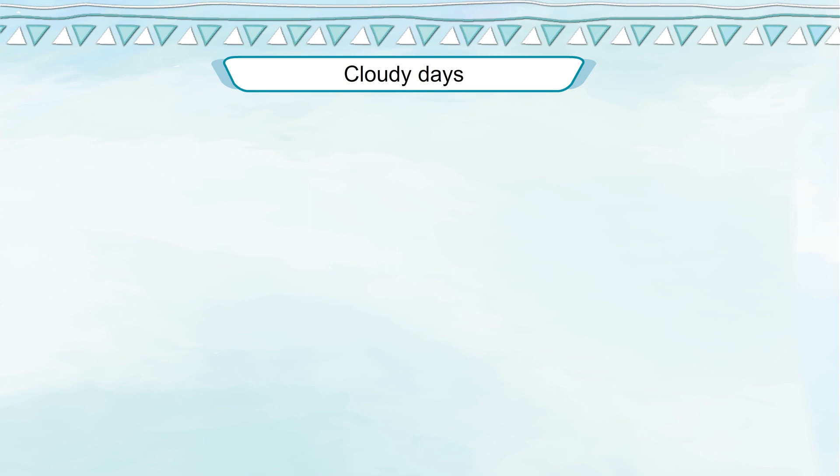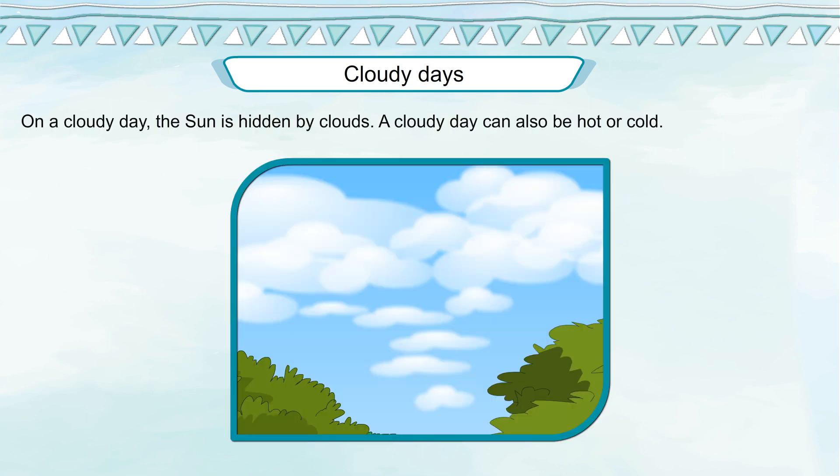Cloudy Days. On a cloudy day, the sun is hidden by clouds. A cloudy day can also be hot or cold.